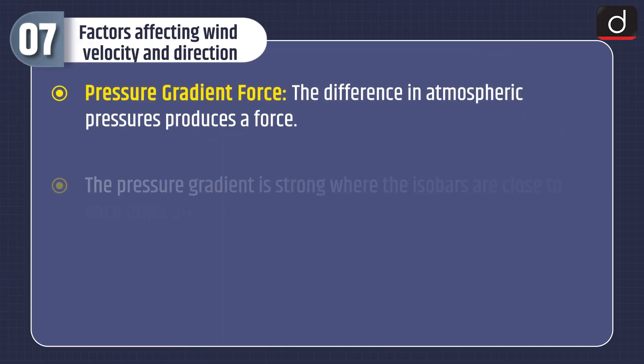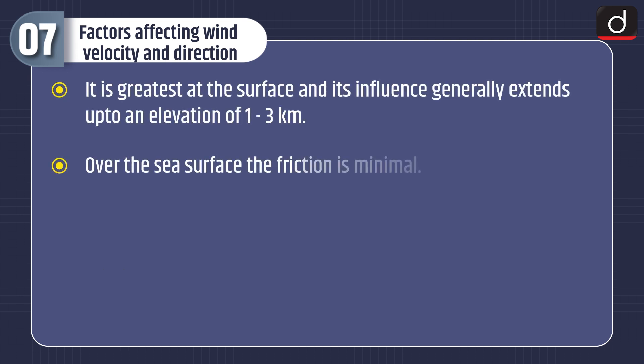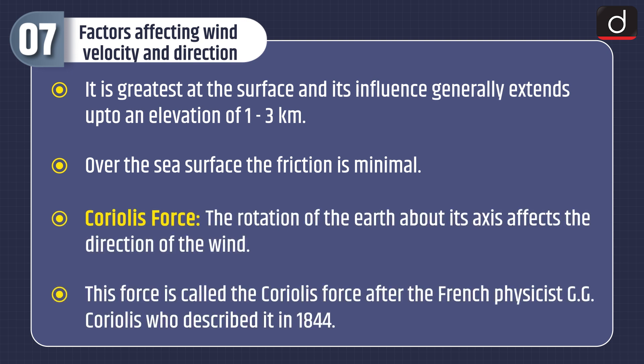Factors affecting wind velocity and direction: Pressure gradient force — the difference in atmospheric pressures produces a force; the gradient is strong where isobars are close together and weak where they are far apart. Frictional force — it affects wind speed, is greatest at the surface, and its influence extends up to one to three kilometers elevation; over sea surfaces friction is minimal. Coriolis force — the rotation of the earth about its axis affects the direction of wind, named after French physicist Gaspard-Gustave Coriolis who described it in 1844.